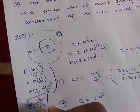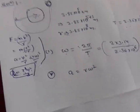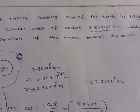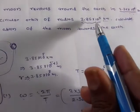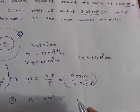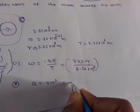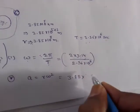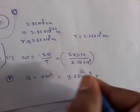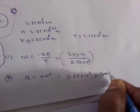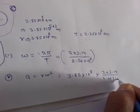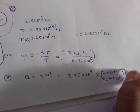So acceleration a equals r·omega². The radius of the orbit is 3.85 × 10⁸ m. Omega equals 2π divided by 2.36 × 10⁶. We substitute this omega squared into the formula a = r·omega².